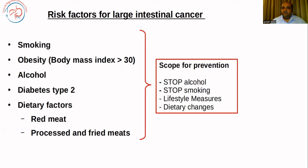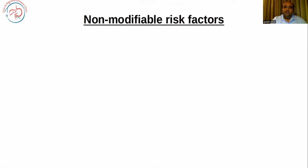When we see all these risk factors, we can see that there is scope for prevention. The goal includes alcohol and smoking cessation — we target to at least reduce them. Lifestyle measures and dietary changes are some of the preventive strategies that you can implement for large intestinal cancer.